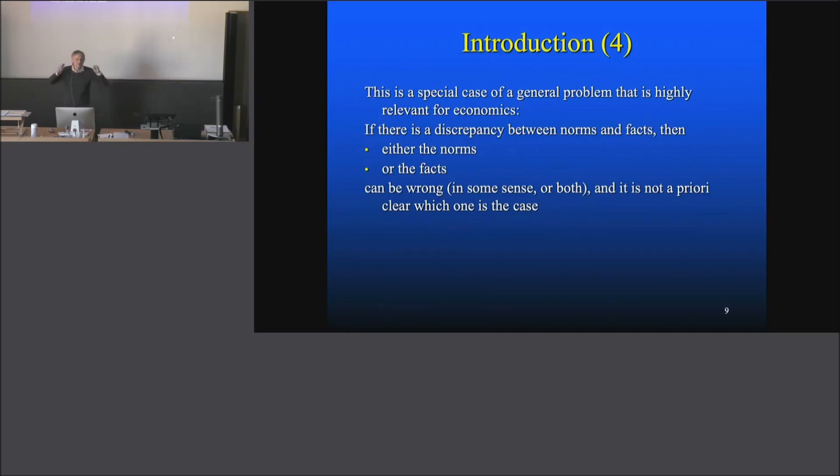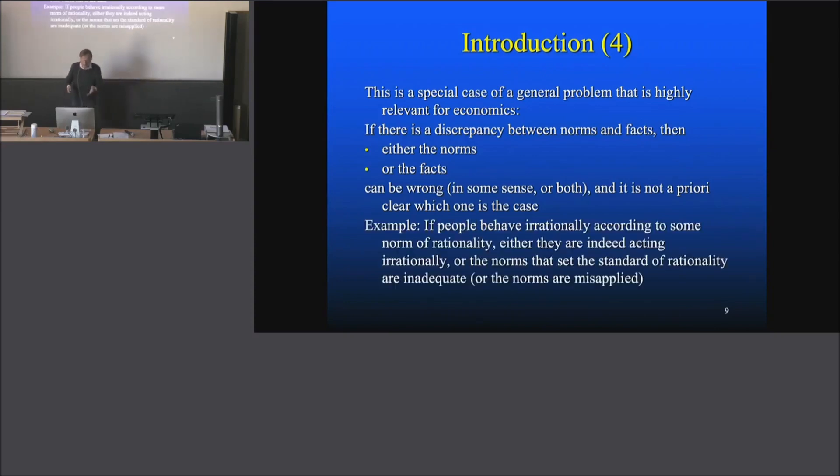It's the problem if there's a discrepancy between norms and facts. That happens everywhere in life. If there's a discrepancy between norms and facts, then either the norms or the facts can be wrong in some sense, or even both can be wrong. It's not a priori clear which one is the case. Whenever you have a discrepancy between norms and facts—something, somewhere, a norm wherever it comes from, and you have some facts—and the facts don't obey the norms, it's not clear what's wrong. For instance, here's an example immediately relevant for economics: if people behave irrationally according to some norm of rationality, say you have in microeconomics violating transitivity—then economists say that's irrational if you violate transitivity.